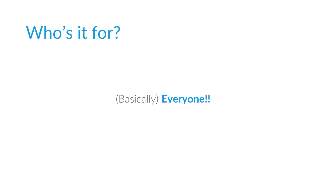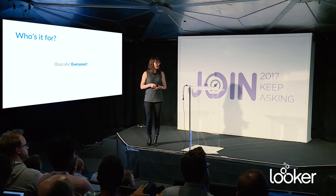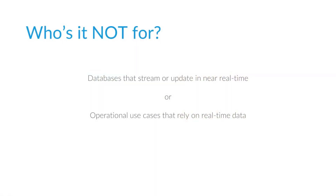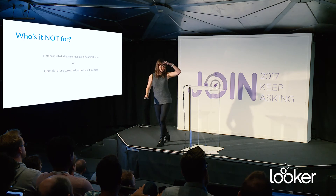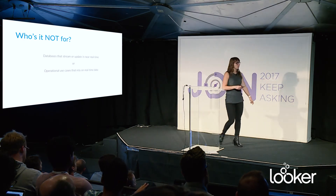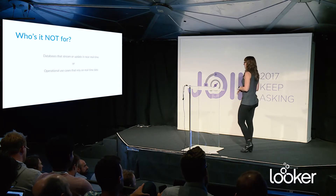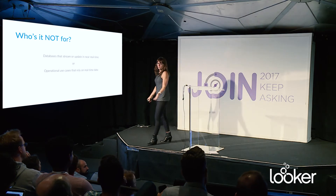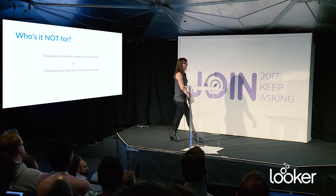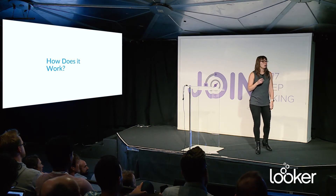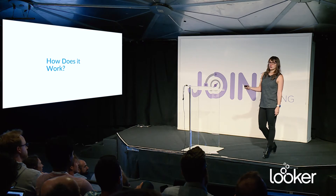So who is it for? It's for everybody. We anticipate that almost everybody has some use for data groups and smart caching. There are a couple of exceptions — if you have databases that stream or update in near real-time, or you're using Looker in some particular operational use cases. For example, a media property that streams data as soon as they put a story on their front page, tracking clicks in real time — in that kind of case you don't really need data groups. But even in cases where you have an operational use case or real-time data, there are probably also analytical use cases within your company where you could take advantage of this.